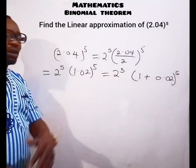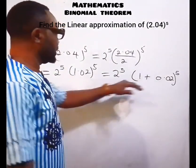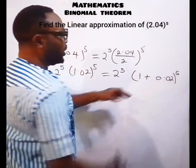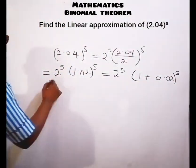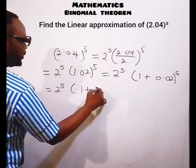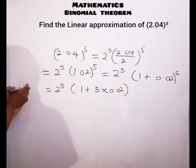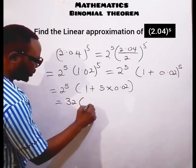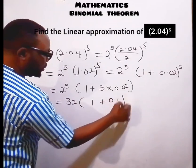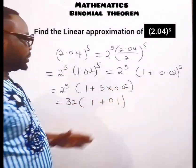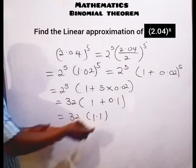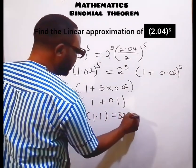Now we can apply our linear approximation. It becomes 2 raised to the power of 5 into the bracket of 1 plus 5 multiplied by 0.02. That gives us 32 into the bracket of 1 plus 0.1, which equals 32 into 1.1. So 32 multiplied by 1.1 gives us 35.2.